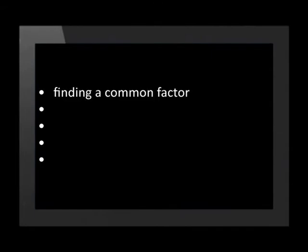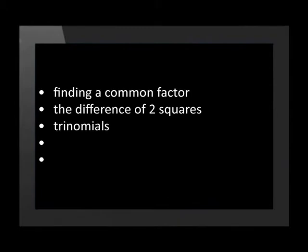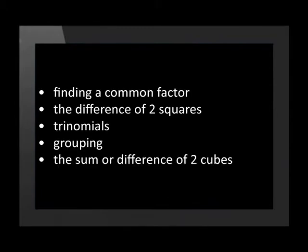There are five methods of factorization. Let's go over them again. The methods of factorization are: finding a common factor, difference of two squares, trinomials, grouping, and sum or difference of two cubes.